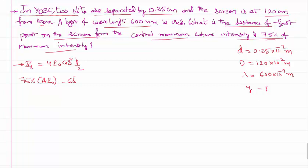So it equals cos² (φ/2) times 4I₀. This 4I₀ can be cancelled. 75% is nothing but equal to 3/4. So 3/4 equals cos² (φ/2).